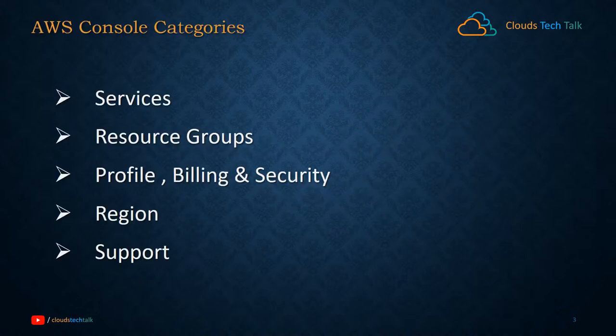In summary, there are five sections in the AWS console. First, services, from where you can access different services and offerings from AWS. Second section is resource groups, where you can explore different groups of resources. You can tag resources and create your own logical grouping of all AWS resources that you are currently using. That is very helpful when you specifically analyze your billing — you can quickly understand which resources are responsible for most of your cost.